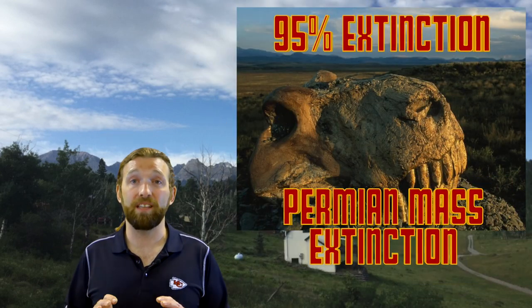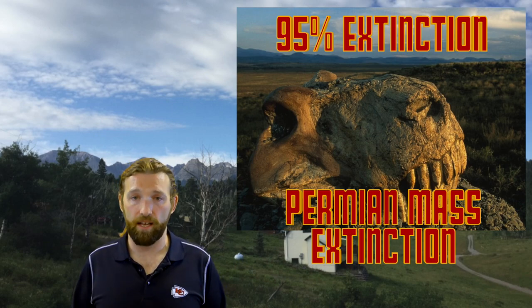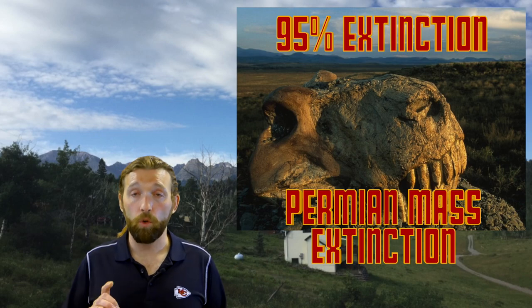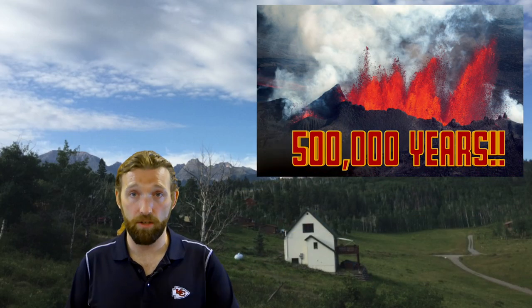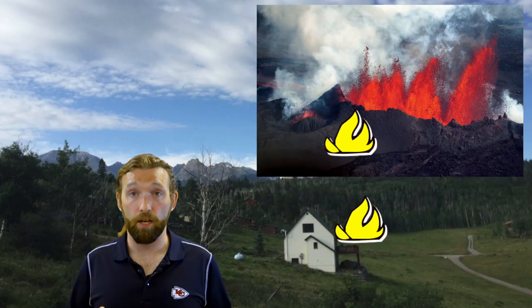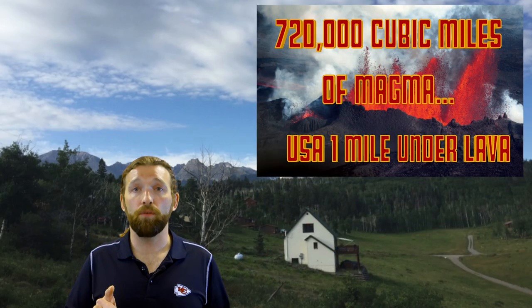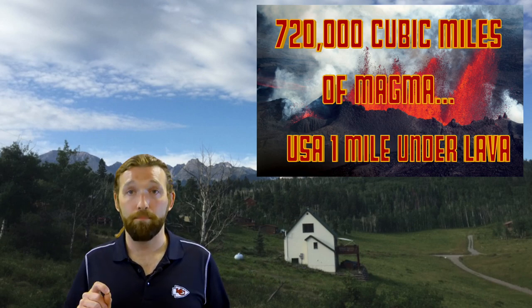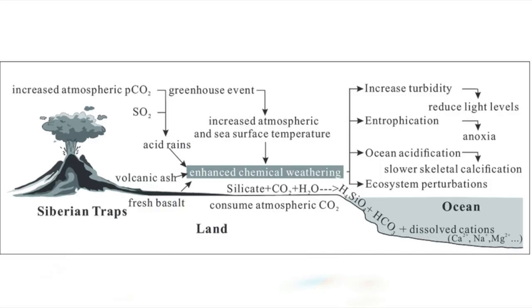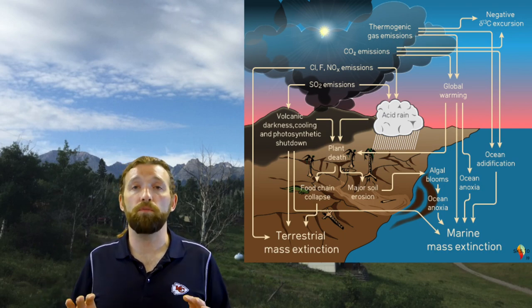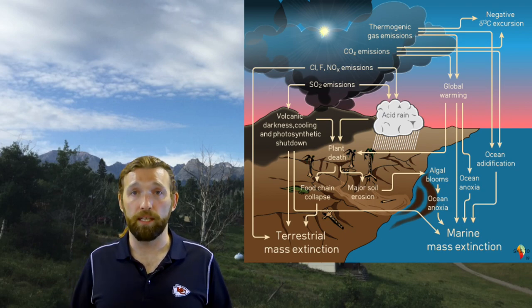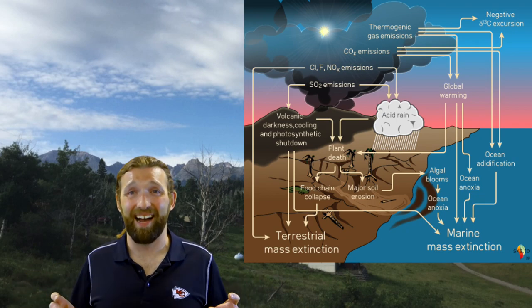The coolest thing about the Permian is really what happened at the end of it. The end-Permian extinction was the largest mass extinction in Earth's history — 95% of all life on Earth was wiped out. It was caused by a super volcano located in Siberia that erupted for 500,000 years. It put out so much lava it could cover the entire United States a mile thick in magma. Temperatures raised as much as 10 degrees Celsius across the planet, and the oceans became massive dead zones.